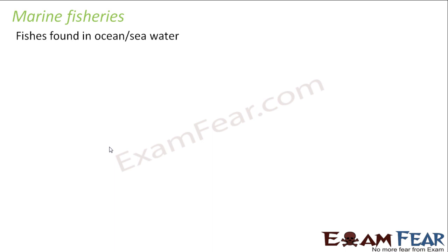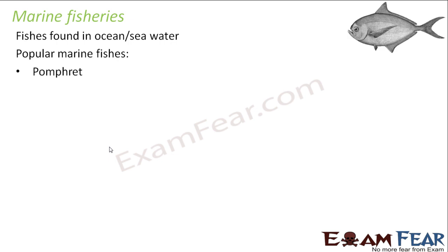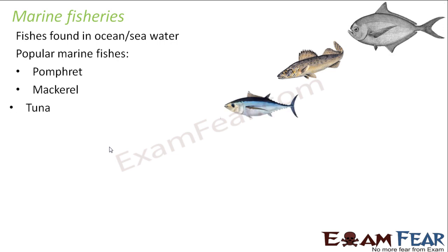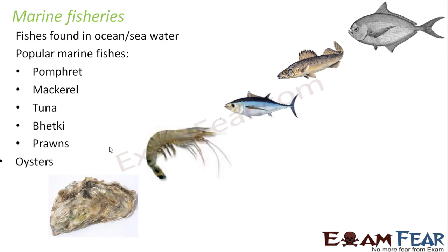Some popular marine fishes found in ocean or sea water include pomfret, mackerel, tuna, bhetki, prawns, and oysters. These are popular marine fishes found in oceans and sea water. If you've been to sea beaches, you'll see that the food available around that locality would be one of these fishes.